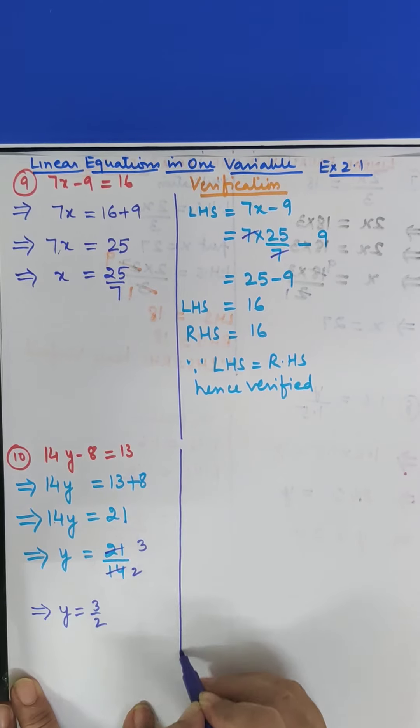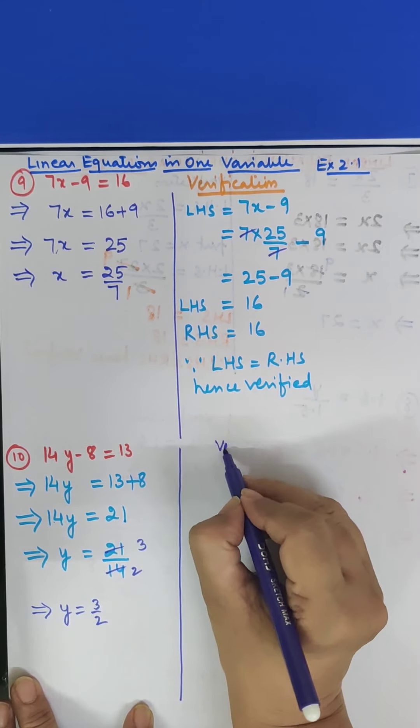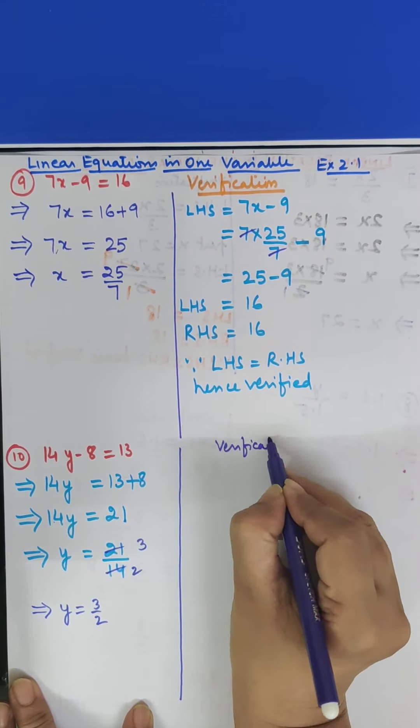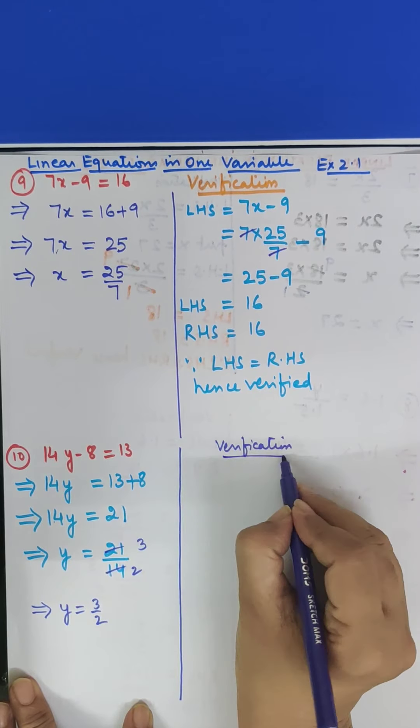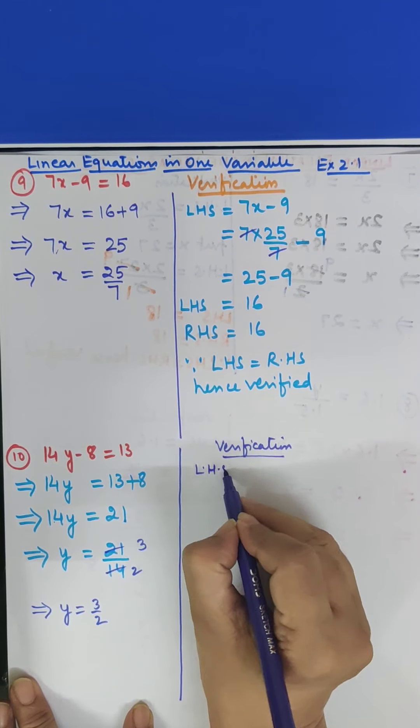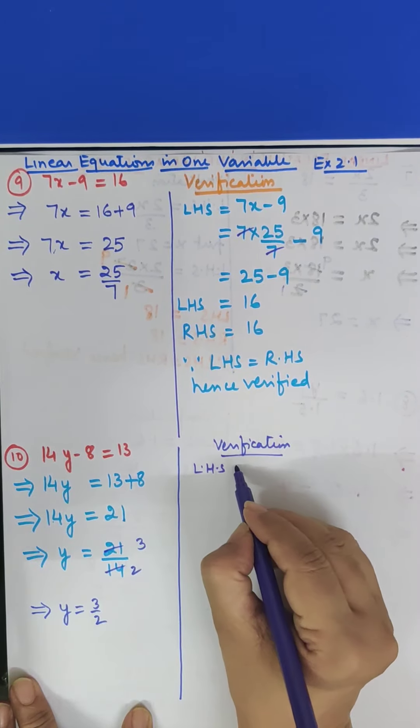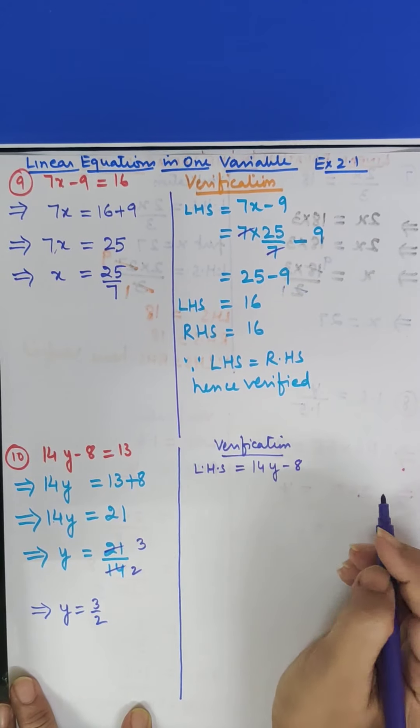Now you verify it. Verification. What is LHS here? This is 14Y minus 8.